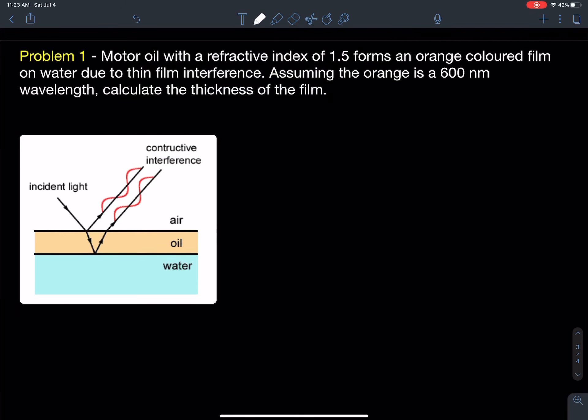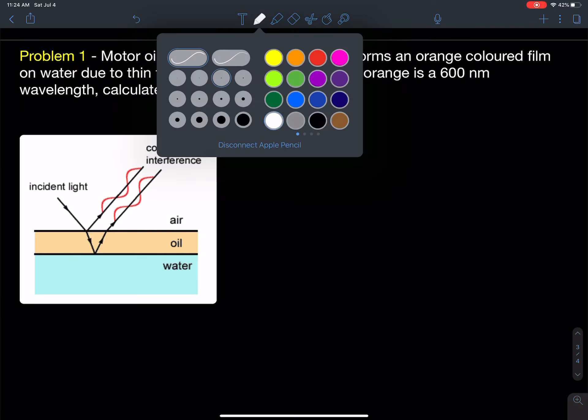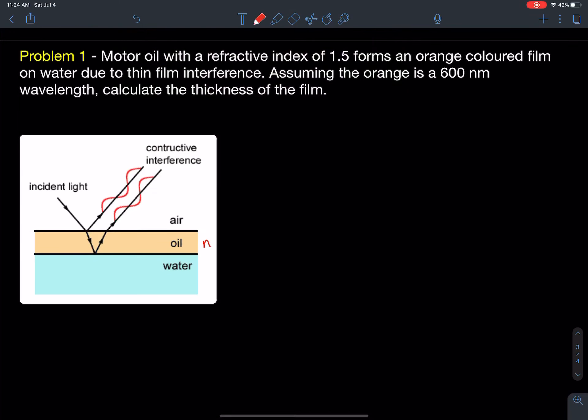The first problem here, we're looking at motor oil. If motor oil is placed on top of water and that motor oil has a refractive index of n equals 1.5, what happens is that oil forms an orange colored film due to thin film interference. Assuming the orange is 600 nanometer wavelength, calculate the thickness of the film. They're trying to get us to calculate what is that thickness.